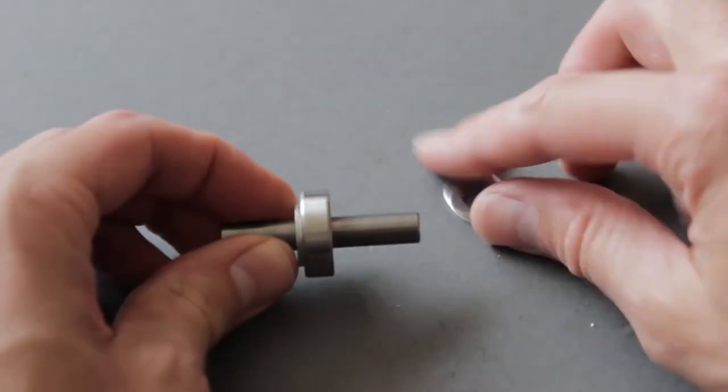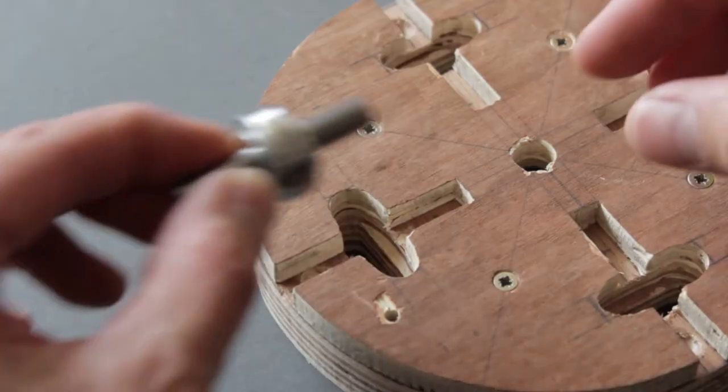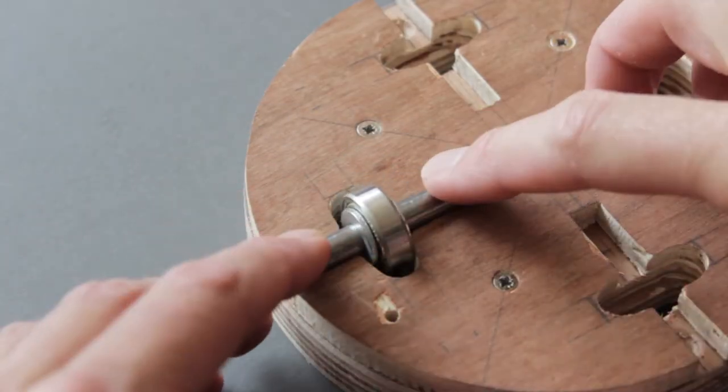I cut four lengths of 8mm diameter steel rod and slid bearings and washers over them and then pushed them into the slots.